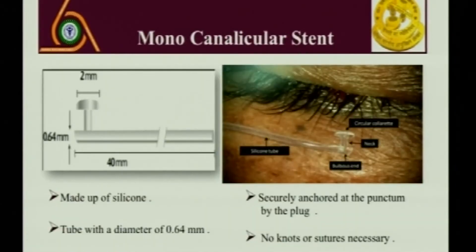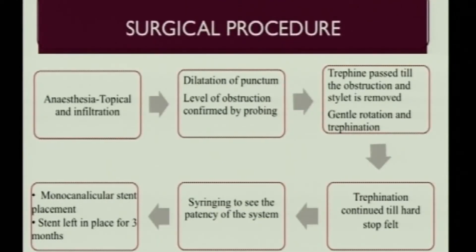This is the mini monocanalicular stent, which you may have used in canalicular repairs and a host of other indications. The surgical procedure is done under topical and infiltration anesthesia. The punctum is dilated first — I'll be showing this in the video, so we can skip this slide.